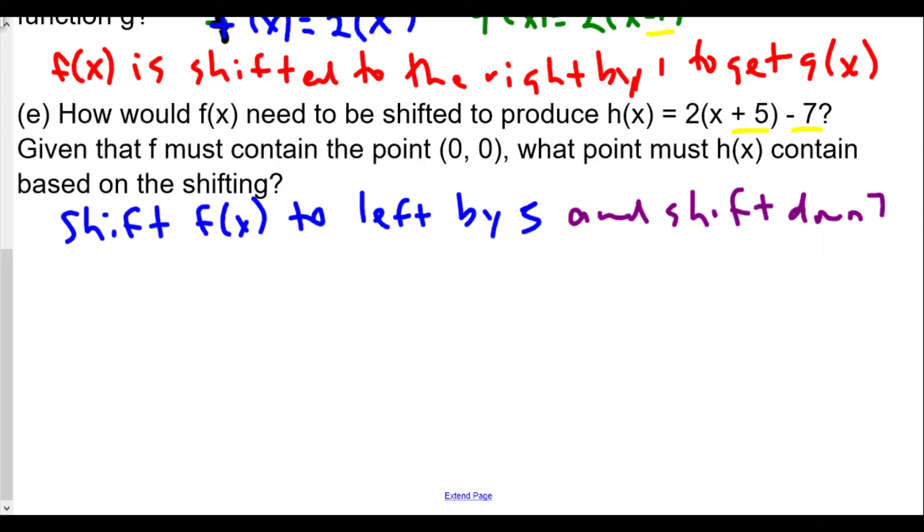That will mean the transformation we're going to have is (x, y) becomes (x - 5, y - 7). That's the translation we're doing. We're going to move everything to the left by five and down by seven. That's the transformation we're going to need to get to h(x). We shift f(x) to the left by five and shift down by seven to get h(x).